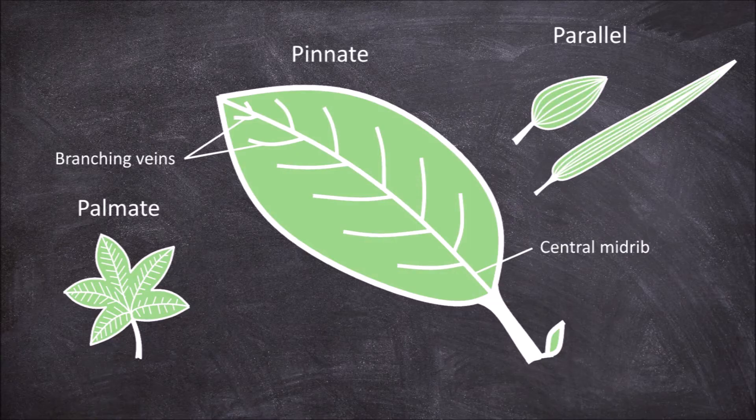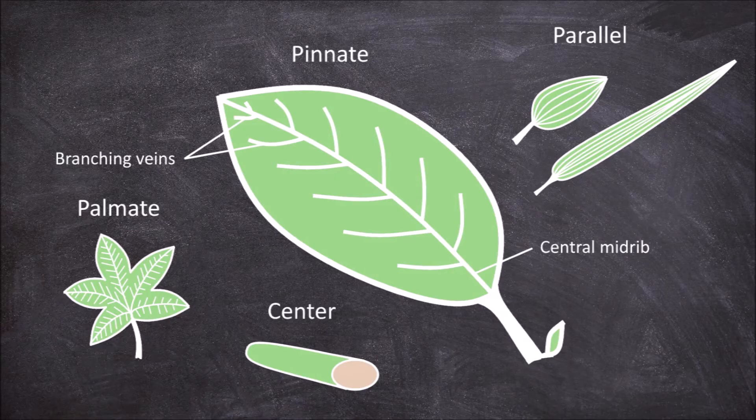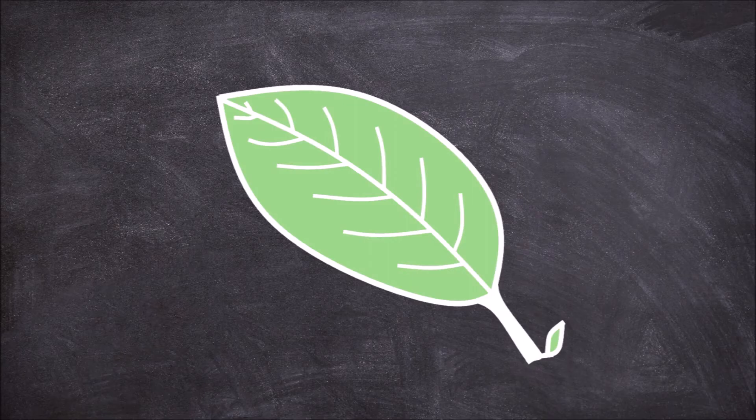In some leaves such as needle leaves there is very little venation at all and the few veins present are center veins found running through the inner center of the blade. The leaf can also differ on the number of leaf blades present.